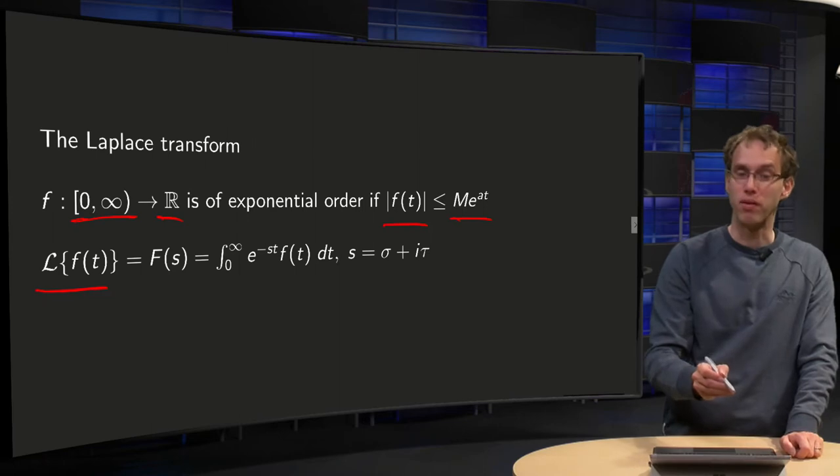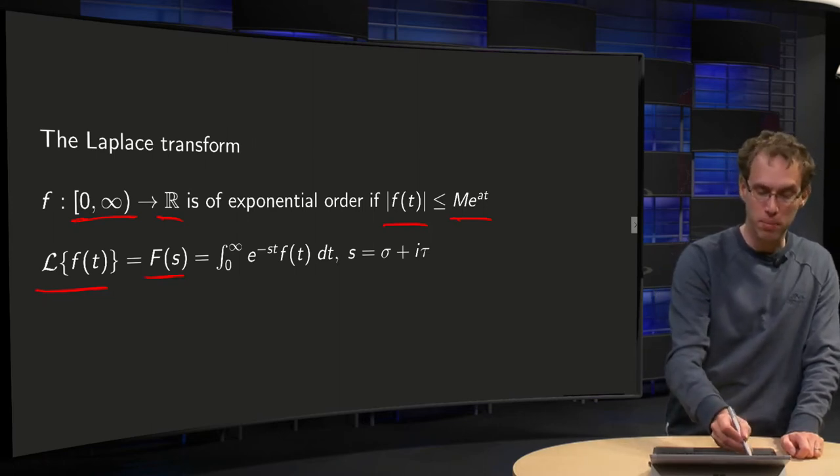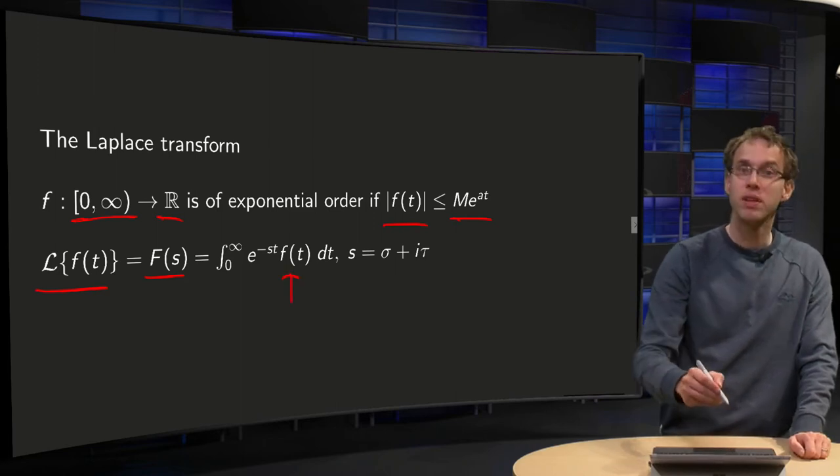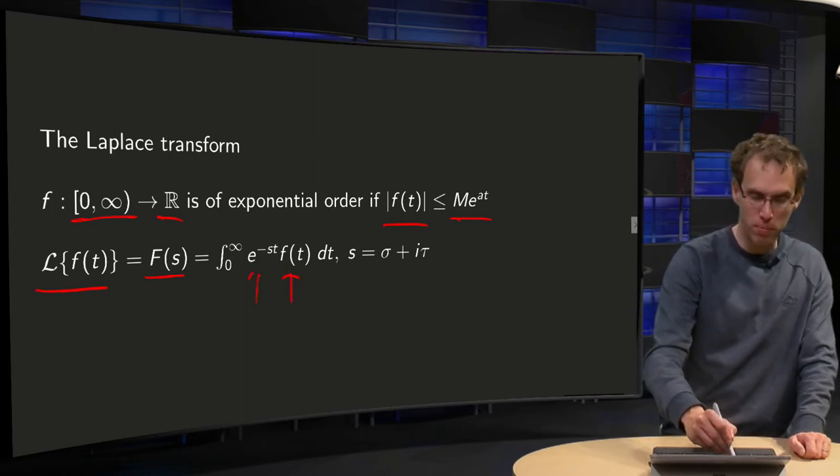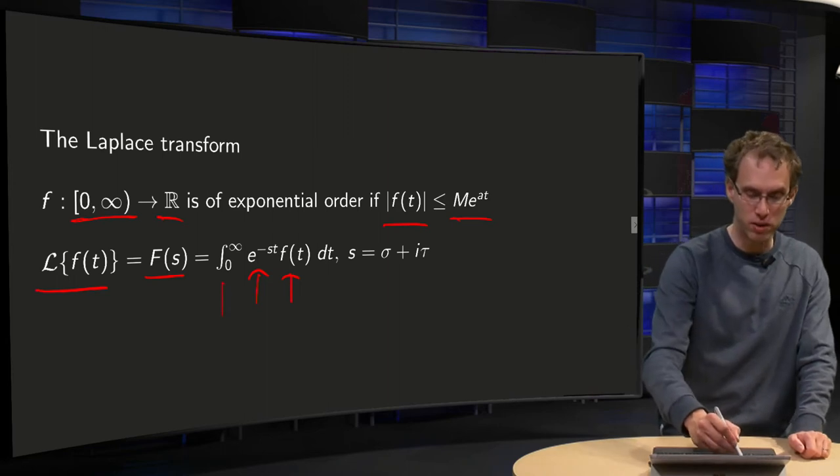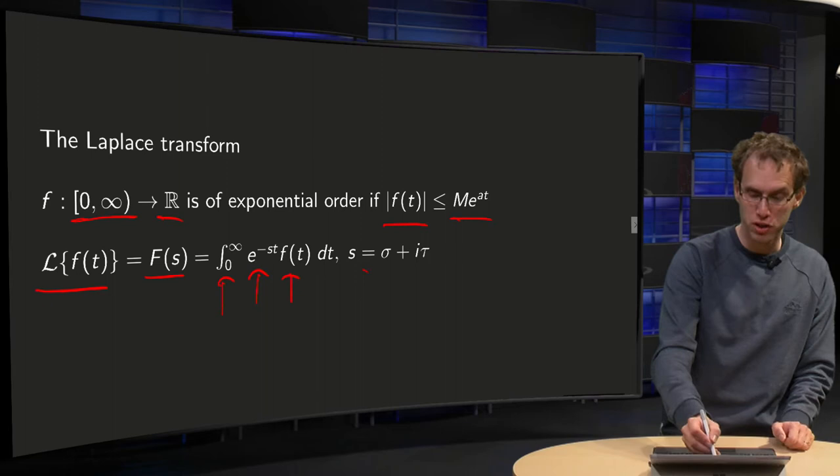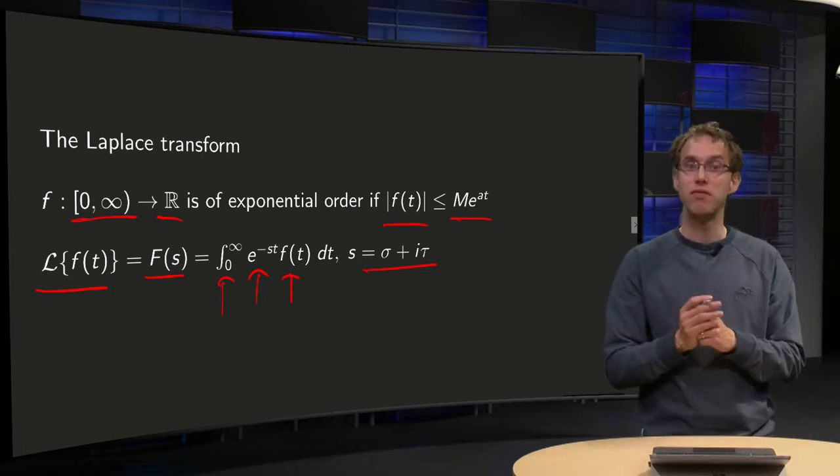The Laplace transform of f(t) is denoted as capital F(s). How do we compute that? Well, you take your f(t), you multiply by e^(-st) and integrate from 0 to infinity, where s may be some complex number σ + iτ. That is how it is defined.